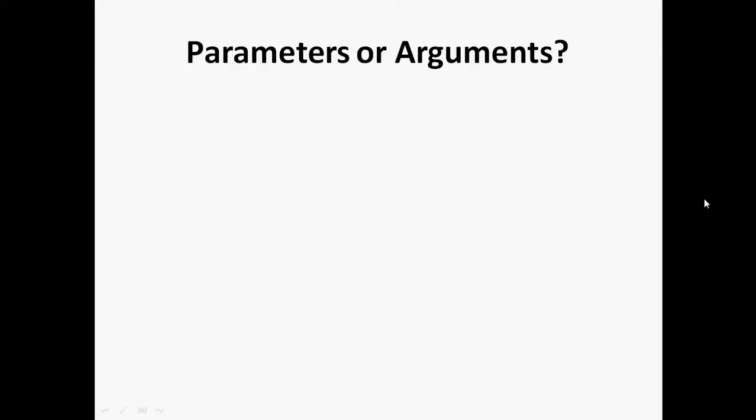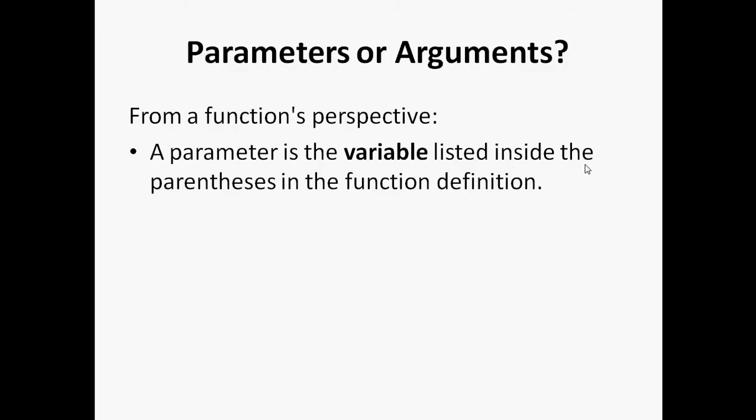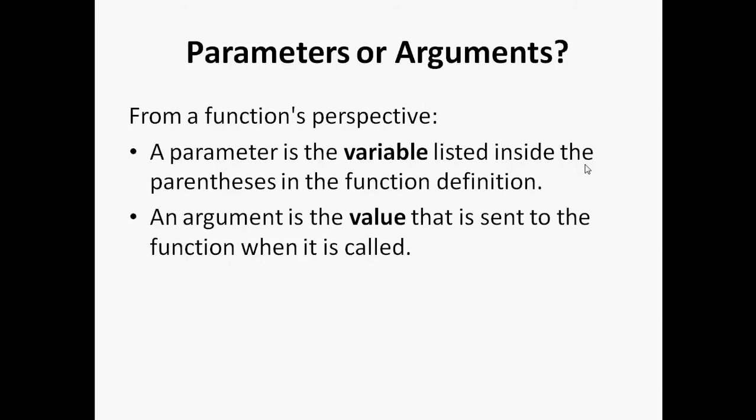We have seen how to pass arguments inside a function. There are two terms which are used: one is parameter, another is arguments. From a function's perspective, a parameter is a variable listed inside the parentheses in the function definition — that means, when we define a function, we are listing the variables which are called parameters. An argument is a value that is sent to the function when it is called — that means, the argument is the value which we are passing while calling a function.